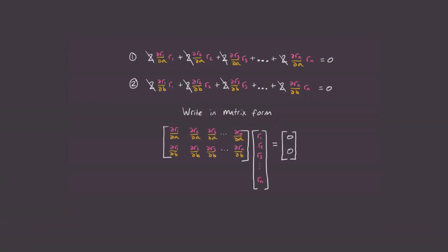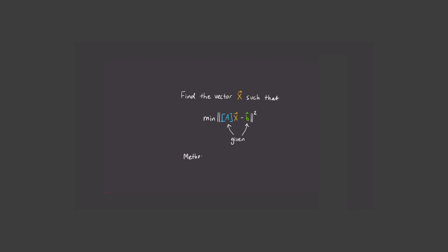Last time, we solved this using calculus. But there is another method. Instead, let's solve for the vector Ax to be as close to the vector B as possible. We do this because we want the term Ax minus B to be as close to the zero vector as possible to accomplish this minimization.